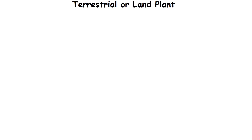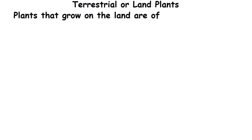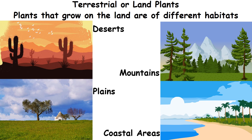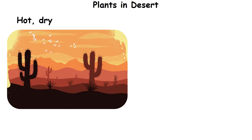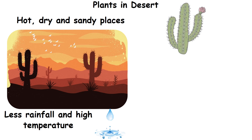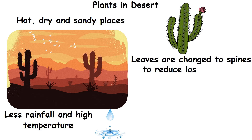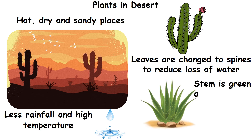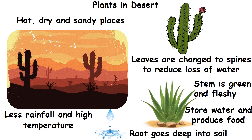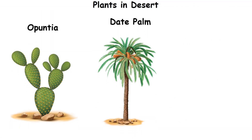Terrestrial or land plants. The plants that grow on land are of different habitats such as deserts, mountains, plains and coastal areas. Plants in desert grow in hot, dry and sandy places. Deserts get very less rainfall and experience high temperature, hence there is scarcity of water. Leaves are changed to spines to reduce the loss of water. The stem is green and fleshy — it stores water and produces food. These plants have a long root that goes deep into the soil. Example: opuntia, date palm and oliveira.